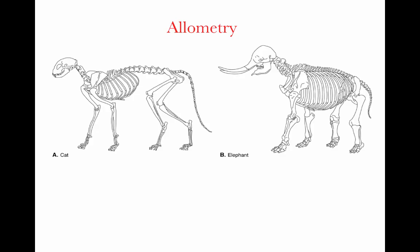We can also think about this in terms of evolutionary patterns. Here is an illustration of a cat skeleton and an elephant skeleton drawn to the same scale, so we can see differences in shape independently from differences in size. The volume enclosed by the elephant's rib cage is much, much larger than the relative size of the rib cage volume in the cat. The reason is that internal organs need to increase their surface area disproportionately to the overall size — much more room is needed for intestines, heart, and lungs to supply the very large body mass.